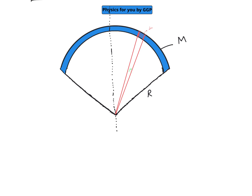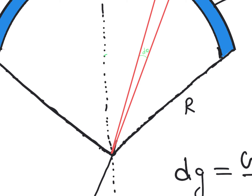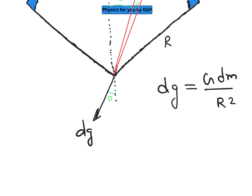From the equation of gravitational field, the field due to this small element is dg = G·dm / r². The direction of this gravitational field is directed toward the element along the radius. This element makes an angle θ with respect to the bisector line, so we resolve dg into components: dg·cos θ along the bisector direction and dg·sin θ perpendicular to it.